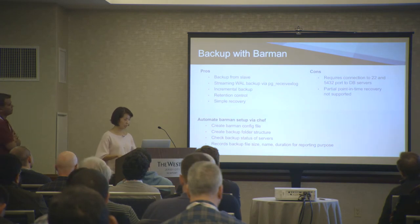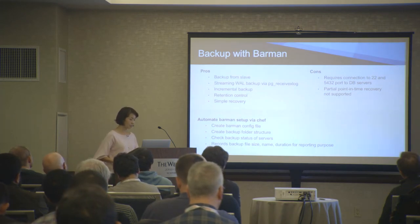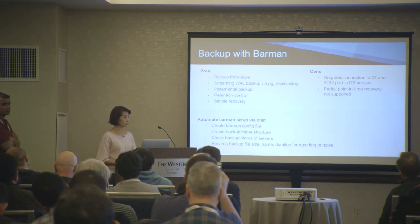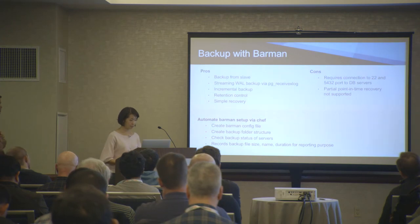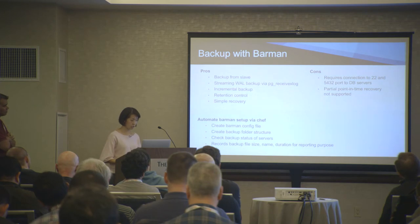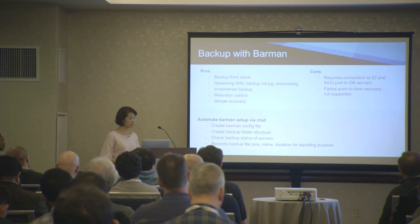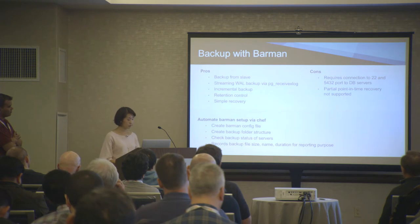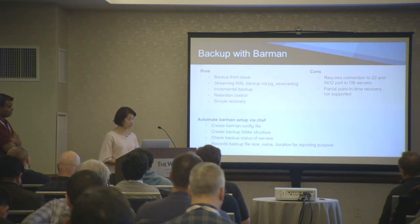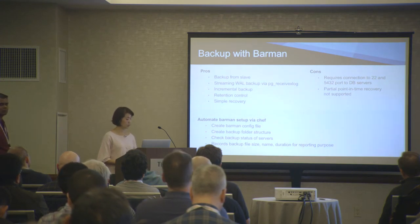We use PG Barman to do our backups. There are many benefits with Barman. First, you can backup from a slave — by using this, you don't have to worry that the backup spikes your CPU or memory on your production server. Second, it can use streaming WAL backups via pg_receivexlog, which minimizes potential data loss. Third is the incremental backup — this is a very important feature for us because we have many very large databases, some over 900 gigabytes. With incremental backup, it only takes 30 minutes and the backup size is only seven gigabytes for a 900-gigabyte database. It also has automatic retention control.